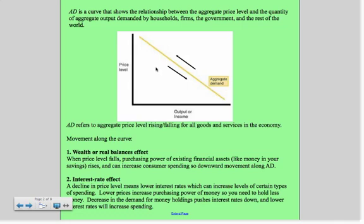The aggregate demand refers to aggregate price levels rising or falling for all goods and services in the economy. It's very important, all goods and services, because unlike a demand curve for a single product, which determines output depending on all other things being held constant, with the aggregate demand curve, this is all of the products in the economy.